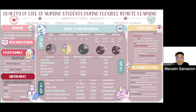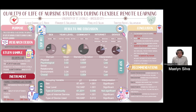The questionnaire first takes into consideration the demographic profile of the respondents, which includes sex, year level, type of community, type of internet service, and type of device being used. The second portion assesses the respondents' quality of life using four domains: the physical domain, psychological domain, social domain, and environmental domain. For the first statement of the problem regarding demographic data, frequency, distribution, and percentage were used.